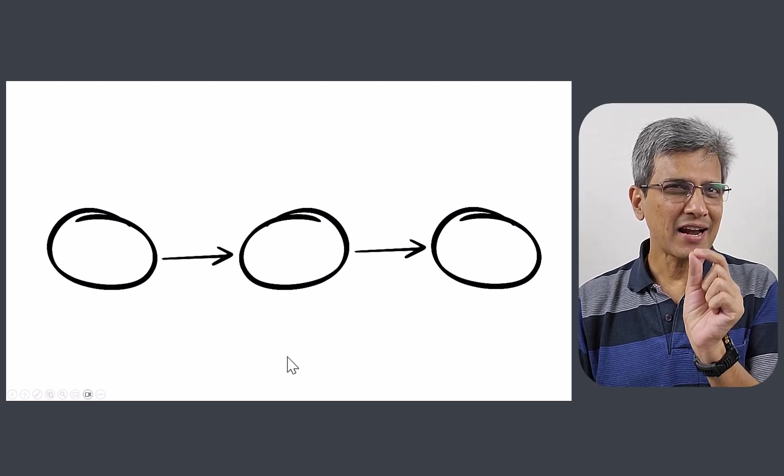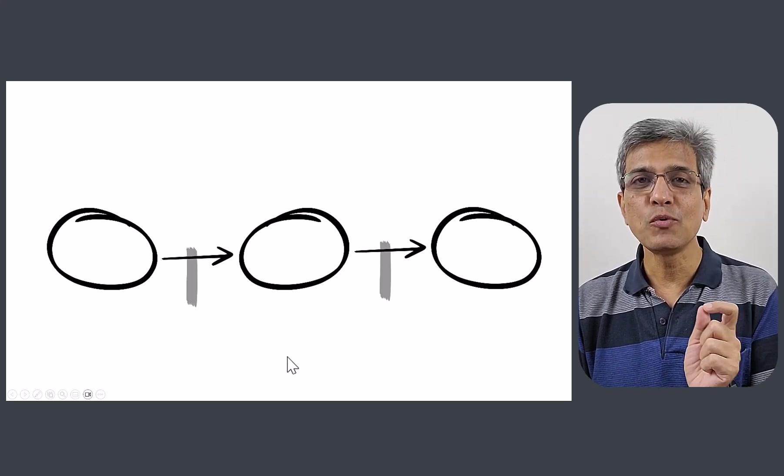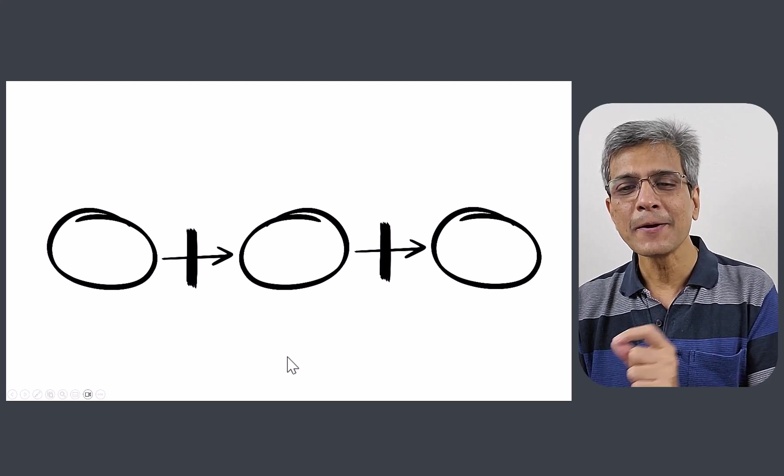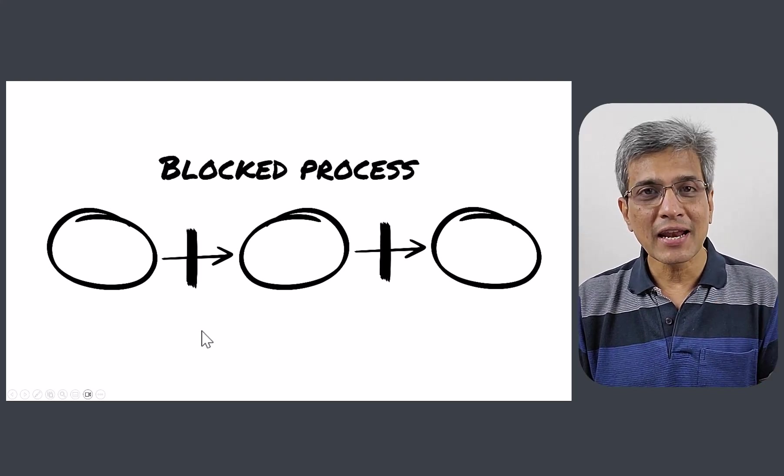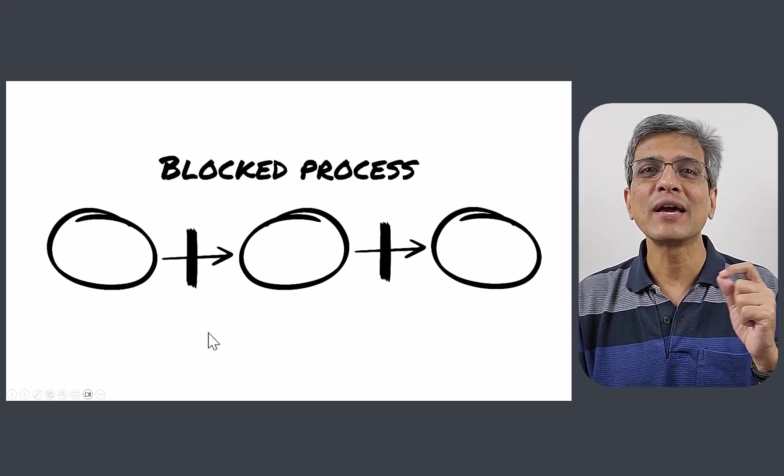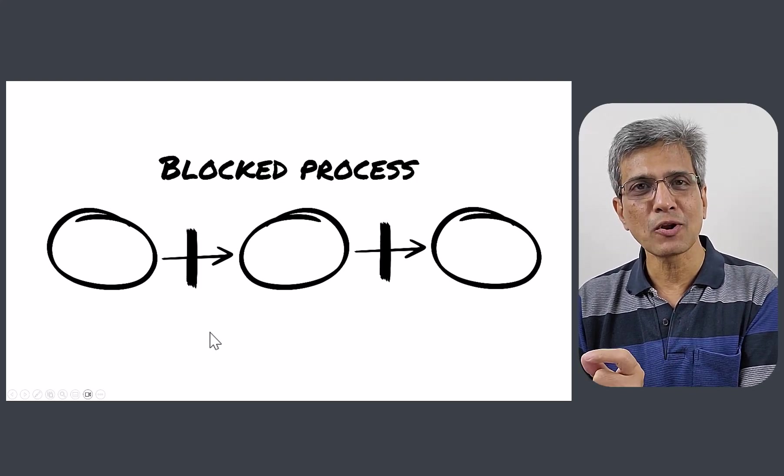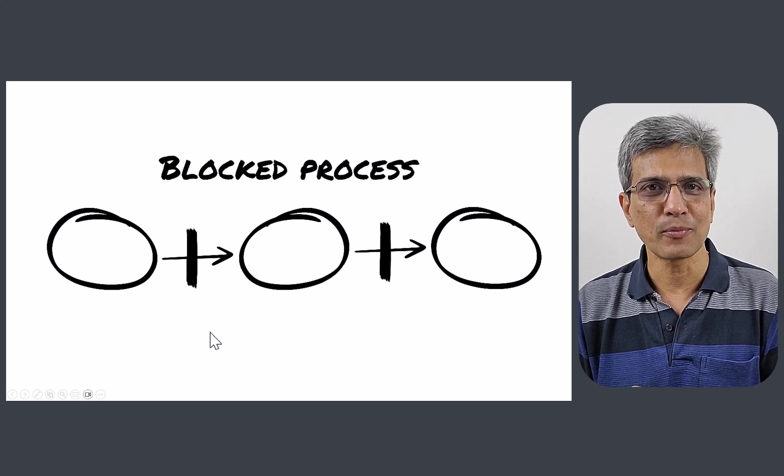Now, let us go back to the same three circles diagram. But this time, let us add a simple twist. I am going to block the movement from one stage to another and all of a sudden, we have a blocked process diagram. You can label what those blocks are and you can explain how by removing these blocks, you can improve the efficiency of your process.